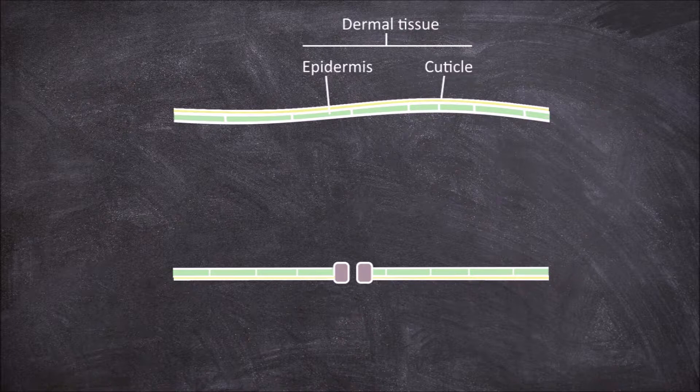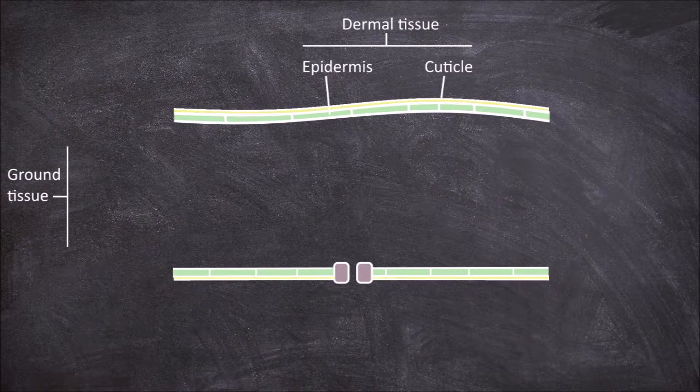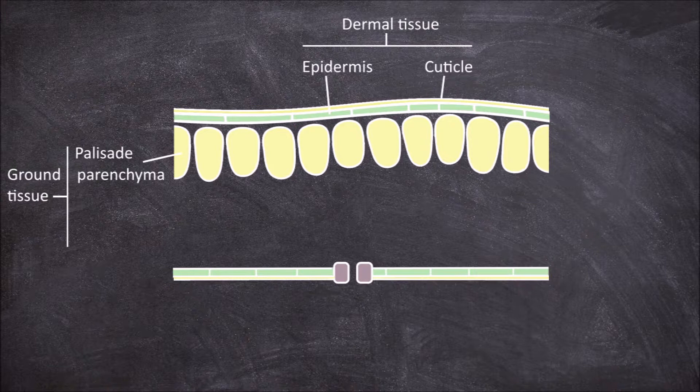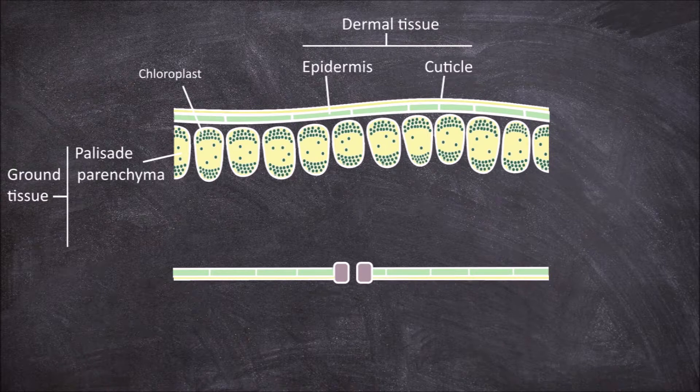In from the epidermis, the leaf is filled with ground tissue. The top layer consists of elongated palisade parenchyma cells. The cells in this layer are tightly packed, have a regular shape, and contain large amounts of chloroplasts as they are the main site of photosynthesis.